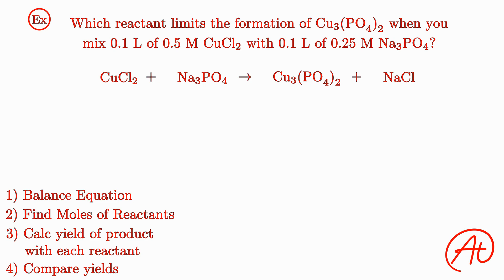Now it's time to balance. First, let's look at the coppers. On the left we have one copper, and on the right we have three, so let's put a 3 in front of CuCl2. This means we have six chlorines on the left and only one on the right, so let's put a 6 in front of NaCl. Now we have six sodiums on the right but only three on the left, so let's put a 2 in front of Na3PO4. The last thing to check is the phosphates — on the left we have two, and on the right we have two. So we're all set.